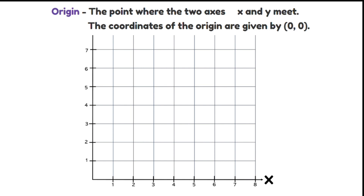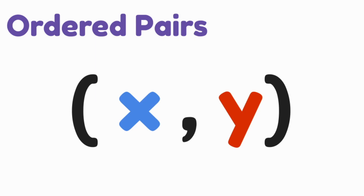The point of origin has the coordinates of 0, 0 — 0 on the x-axis and 0 on the y-axis. Ordered pairs are the coordinates we give to show a location on the coordinate plane or grid. The x-axis coordinate is always written first in ordered pairs, followed by a comma and then the y-axis coordinate.